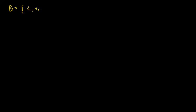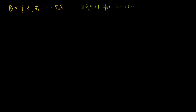Let's say I've got a set of vectors. Let me call my set B. And let's say I have the vectors v1, v2, all the way through vk.